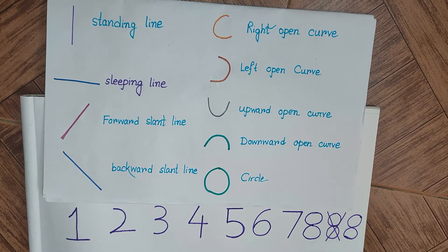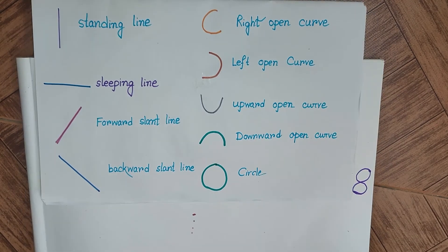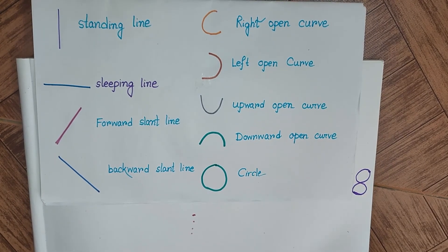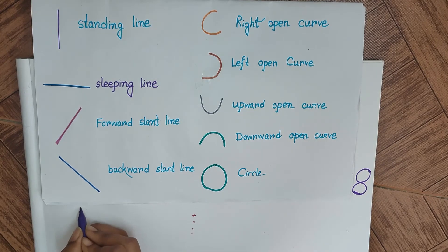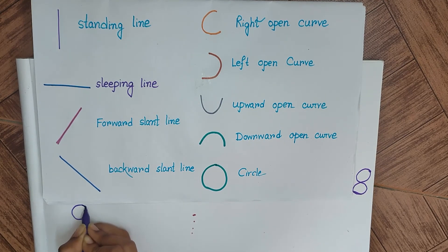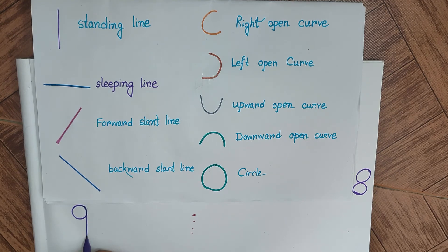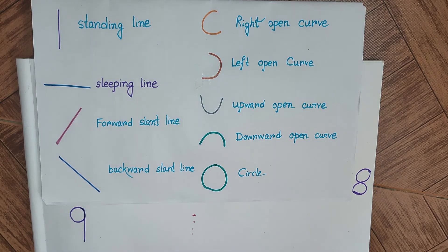Now we will see about number 9. For the number 9, we will be using a circle and then from the right side one standing line, which will give us number 9.